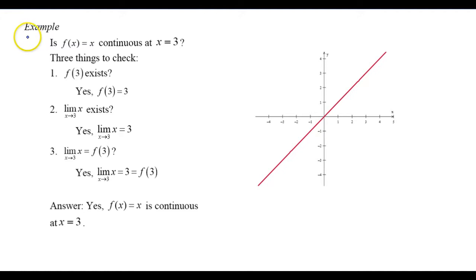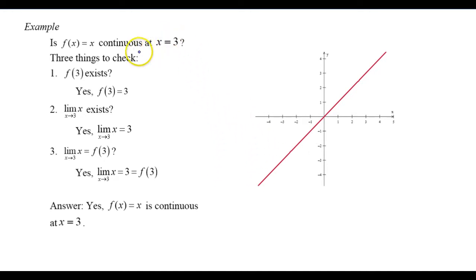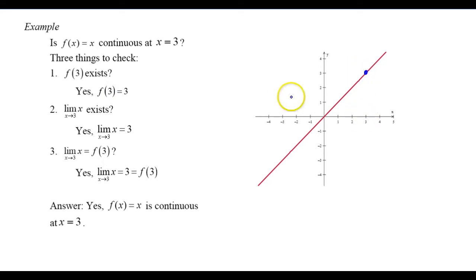In this example, we'll use the three-part definition on a basic function. The question is: is f of x equals x continuous at x equals 3? f of x equals x is a linear function which we can tell by looking is going to be continuous everywhere, but we're just going to go through the motions. Number one: does f of 3 exist? Can I plug 3 into x and get out a value? Yes — substituting 3 in gives f of 3 equals 3. So I'm defined.